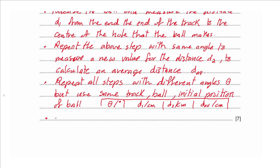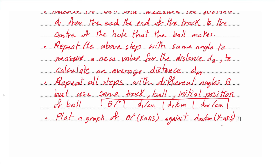Draw a table with column headings: theta in degrees, D1 in centimeters, D2 in centimeters, and average distance in centimeters. Finally, plot a graph of theta per degree on the x-axis against D-average per centimeter on the y-axis. This covers the independent variable, dependent variable, measurements, controlled variables, table, and graph — all required marks.